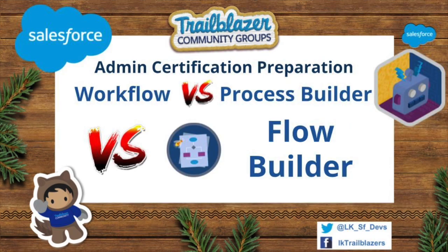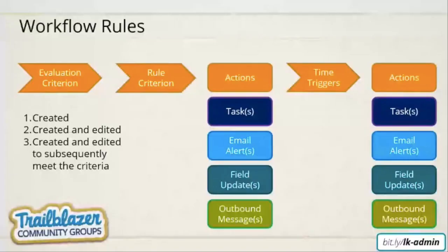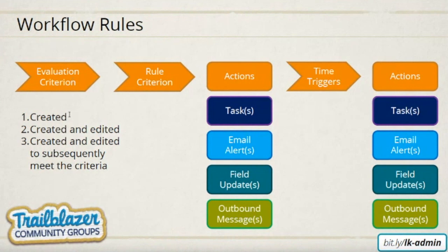So I'm a little bit struggling with the difference between workflow, flow, and process builder — when to use them. So workflow rules were the first option we had. Initially we only had workflow rules for automation when Salesforce started and all the classic things. In workflow, we only have four options and there is one evaluation criteria. Basically, you check one criteria, and if that criteria is met, you do either of these four actions immediately or after some time.